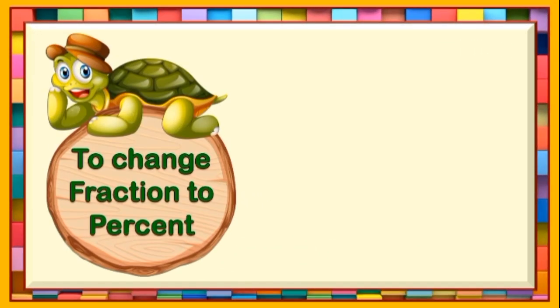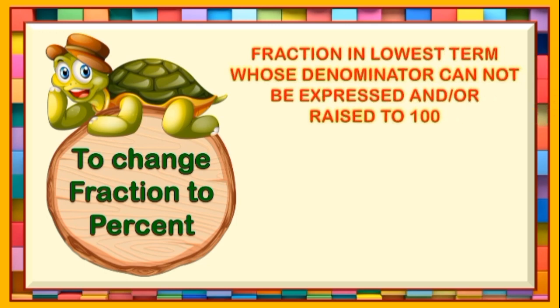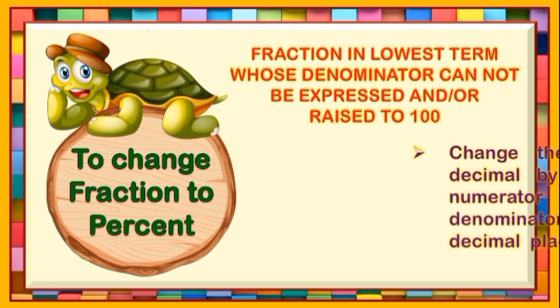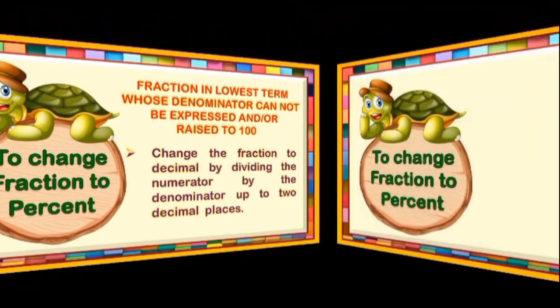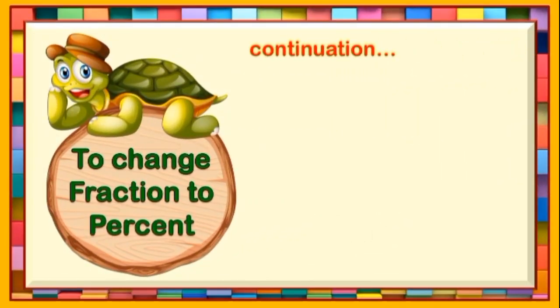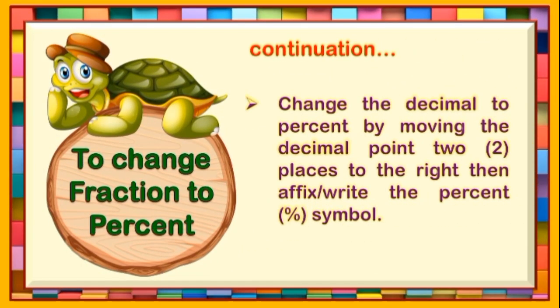The third way in changing fraction to percent is when the fraction is in lowest term and whose denominator cannot be expressed or raised to 100. First, change the fraction to decimal by dividing the numerator by the denominator up to two decimal places. The next step is to change the decimal to percent by moving the decimal point two places to the right, then affix or write the percent symbol.